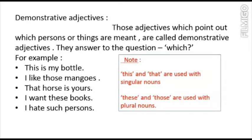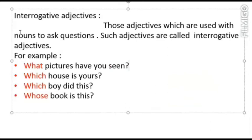So it is clear that those adjectives which point out to persons or things which are meant are called demonstrative adjectives. Next is interrogative adjectives. Those adjectives which are used with nouns to ask questions are called interrogative adjectives. The word interrogative itself indicates asking a question. Such adjectives are called interrogative adjectives.